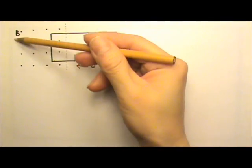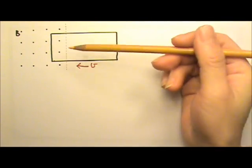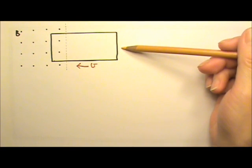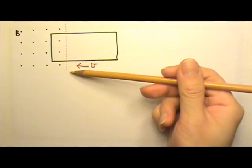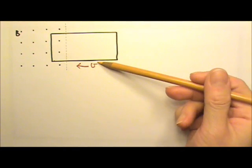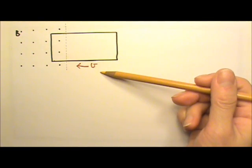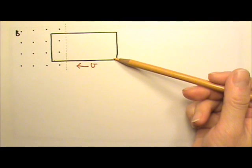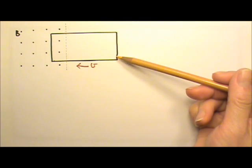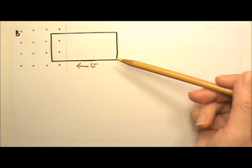There is a uniform magnetic field in this region, and this rectangular wire loop is being pushed into the magnetic field at speed V. Find the direction of the induced current, if there is any, in the loop.